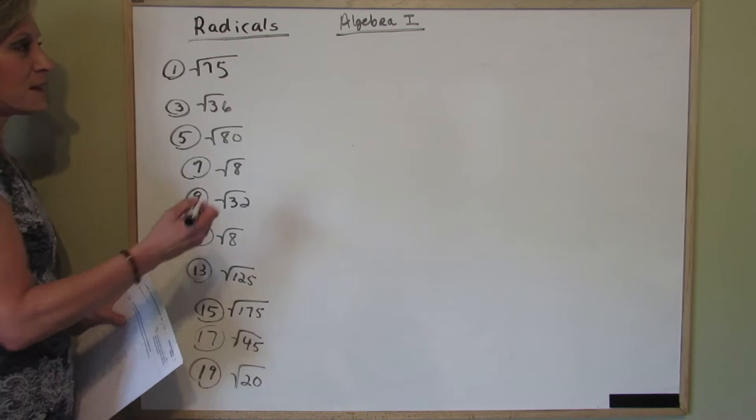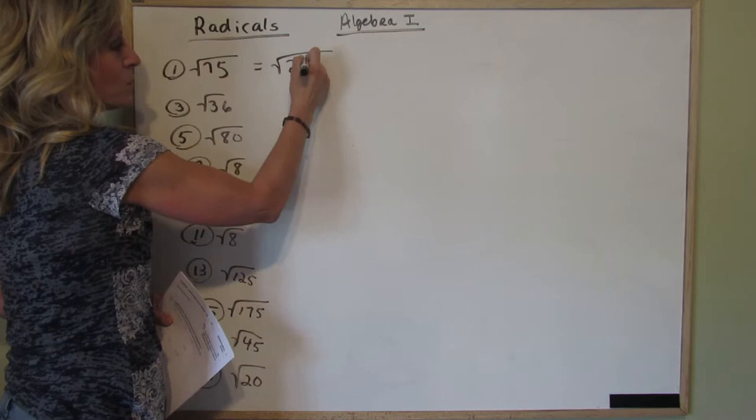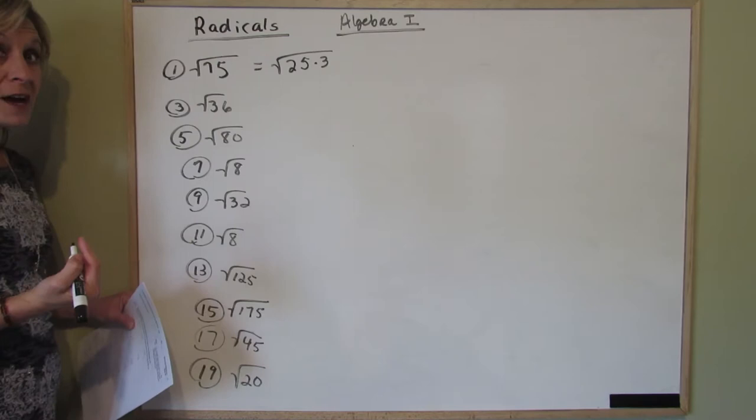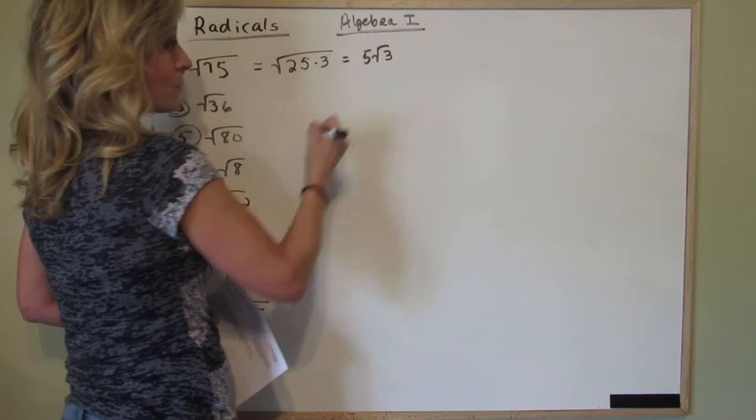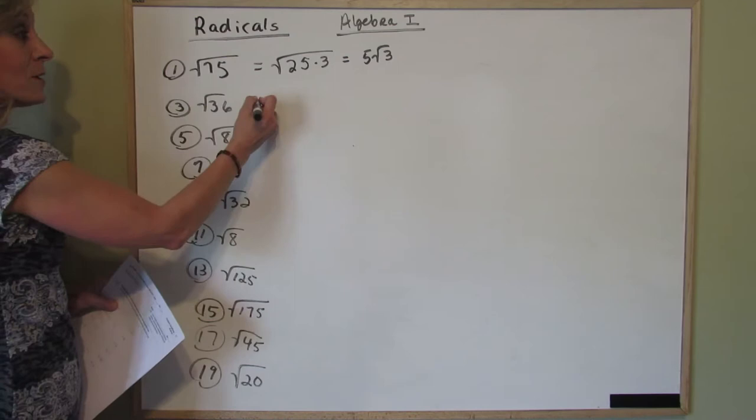Number one, the square root of 75. If we break down 75 we know that 25 times 3 is equivalent to 75. 25 is a perfect square. The square root of 25 is 5, so we have 5 square root of 3. Number 3, the square root of 36. Not a lot involved there. It's just 6.